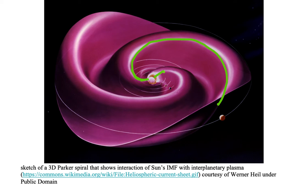In this particular example, we have two coronal holes with two spirals outwards of the IMF.